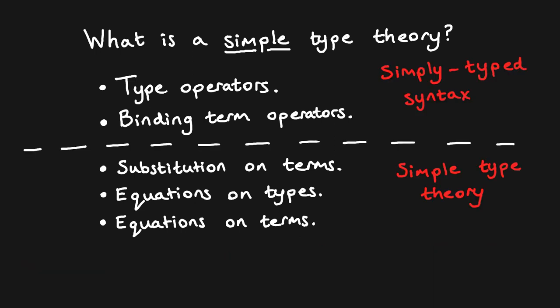The distinction between syntax and type theory is often overlooked, but it is important to distinguish between them in order to prove some important metatheoretic results, such as the substitution lemma mentioned earlier. In our work, we call the fragment of simple type theories without substitution or equations simply type syntax. Equations are deemed non-syntactic because they identify syntactically unequal terms, while substitution is part of the metatheory rather than a purely syntactic operation.